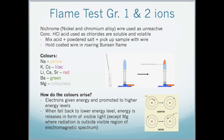We mix the acid and powdered salt, and pick up a small sample with the wire. We then hold the coated wire in a Bunsen flame, as shown here on the right. The colors that are produced: sodium gives a yellow flame; potassium and cesium give a lilac flame; lithium, calcium, and strontium give a red flame; barium gives green; and magnesium gives a colorless flame.